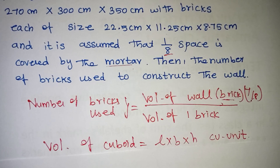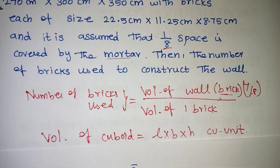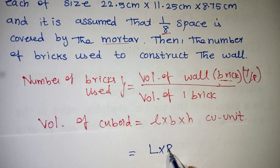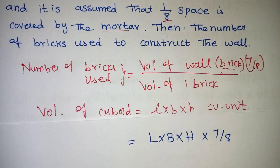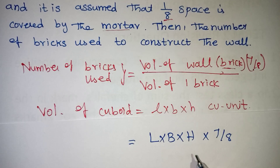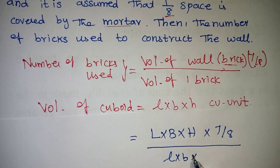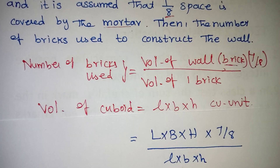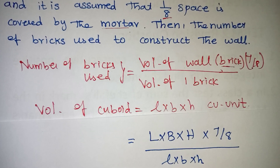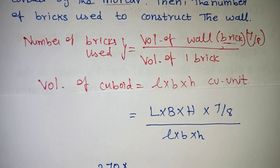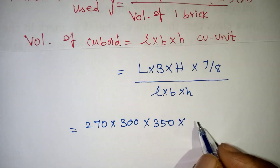Now, the length, breadth, and height are given. The volume of the wall is equal to L into B into H. So the value of the wall is 270 into 300 into 350, multiplied by 7/8 to account for the mortar space.